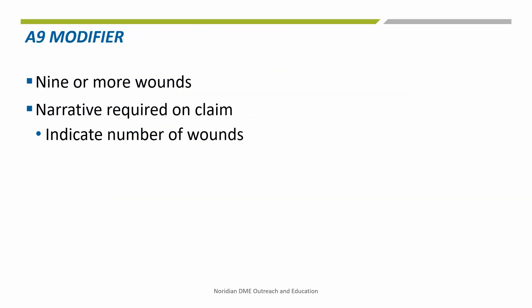The Pricing, Data Analysis, and Coding website defines the A9 modifier as dressing for nine or more wounds. Therefore, when submitting a claim to Medicare with the A9 modifier, a narrative is required. The narrative must indicate the number of wounds the dressing will be used for, since the definition indicates dressing for nine or more wounds.